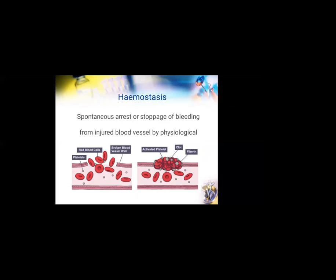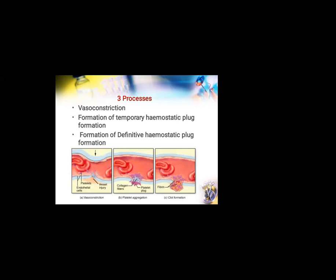Coming to hemostasis, by definition, it is a spontaneous arrest or stoppage of bleeding from an injured blood vessel by a physiological process. Mainly there are three processes which aid in hemostasis: vasoconstriction — as you can see in the first image, the blood vessel constricts, also called vasospasm — in the second image, there is formation of a temporary hemostatic plug, and finally the temporary hemostatic plug is converted into a definitive blood clot. We will not get into the very details of hemostasis but just have a small overview of the steps.